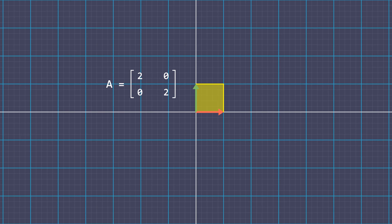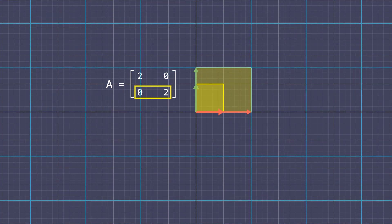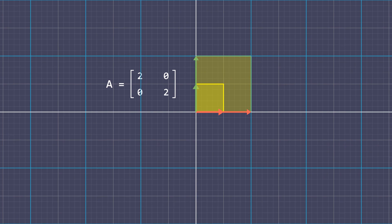Notice that the rows of the matrix A are linearly independent, that is they are not scaled versions of each other. Notice how the individual rows scale the area in their respective directions. The parallelogram represented by the vectors in the transformed space has some area.